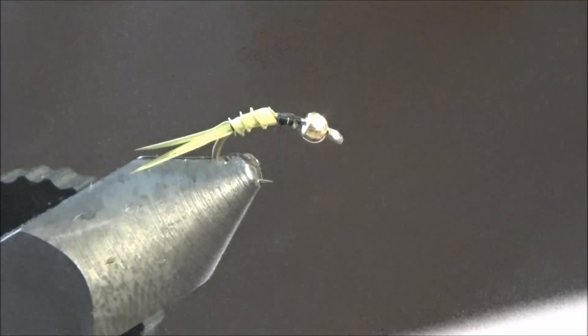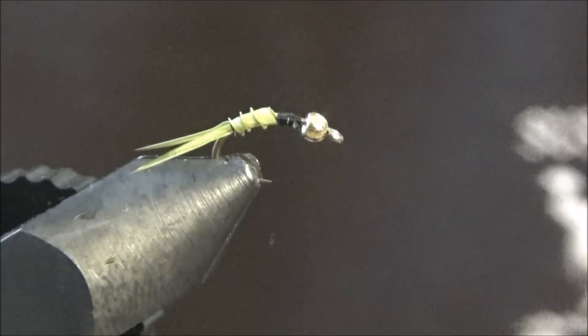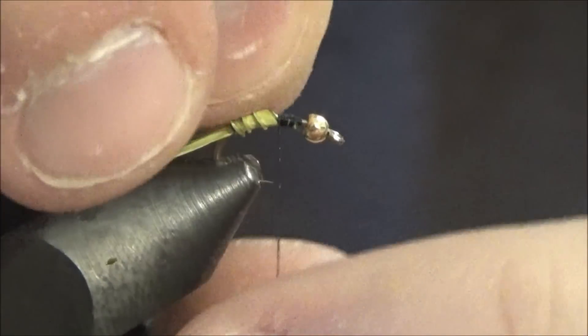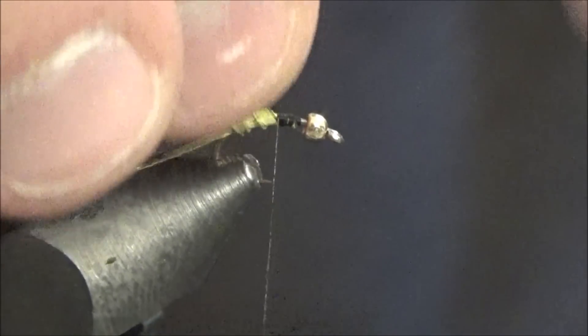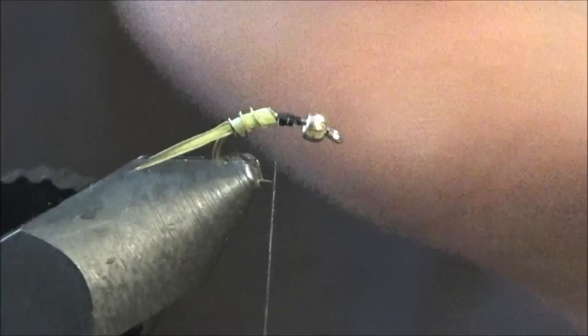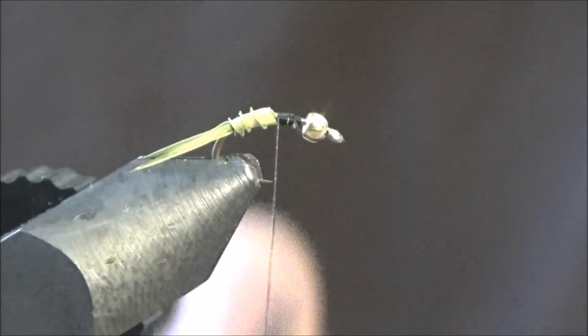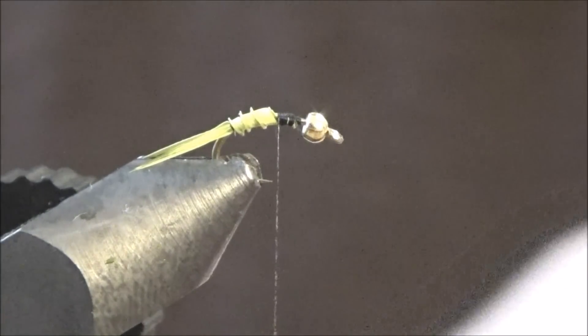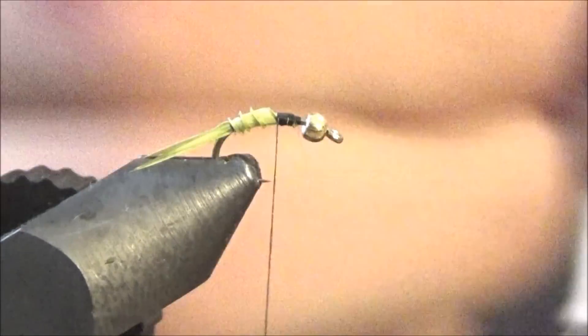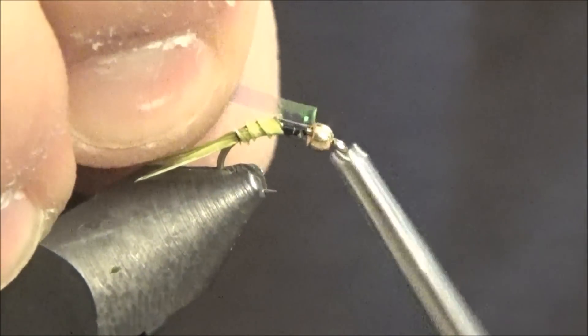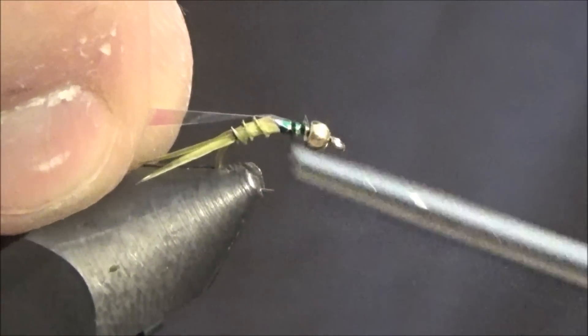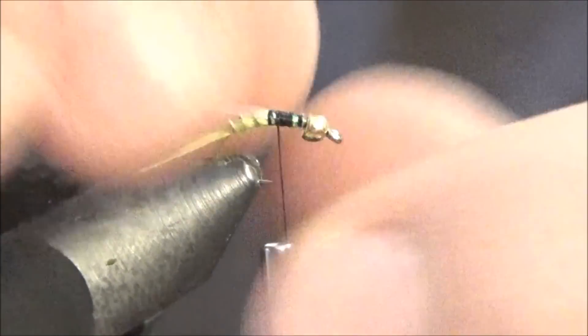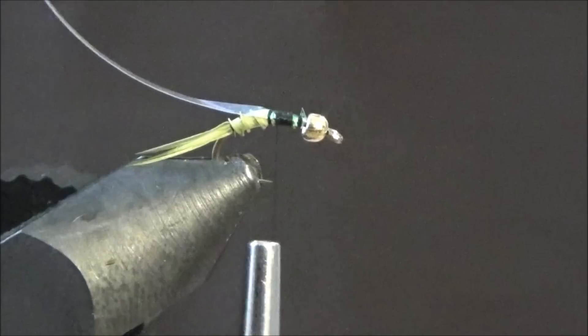Okay, now you can either take pheasant tail for a more natural look. You would tie in about five, six pheasant tail fibers and secure them down, and then you would fold them over for the wing case. But I'm going to use some pearl flash. Snip a little piece off, secure it down right behind the bead, and then take it back to the biot. It's the same thing you would do with five or six pheasant tail fibers.